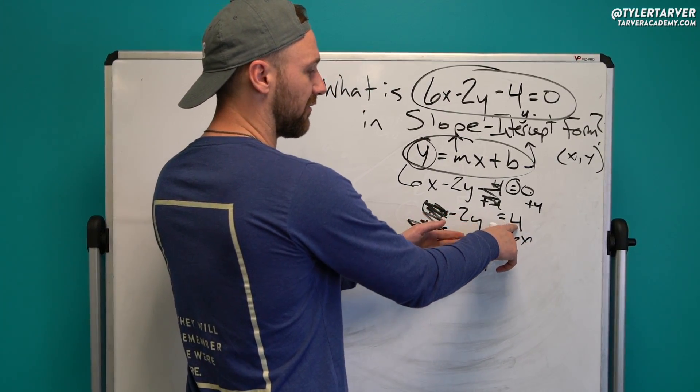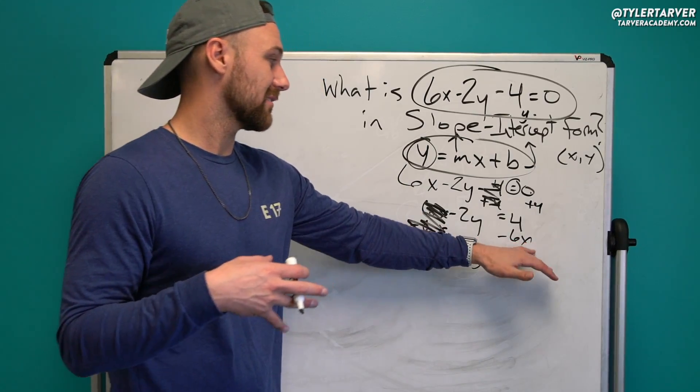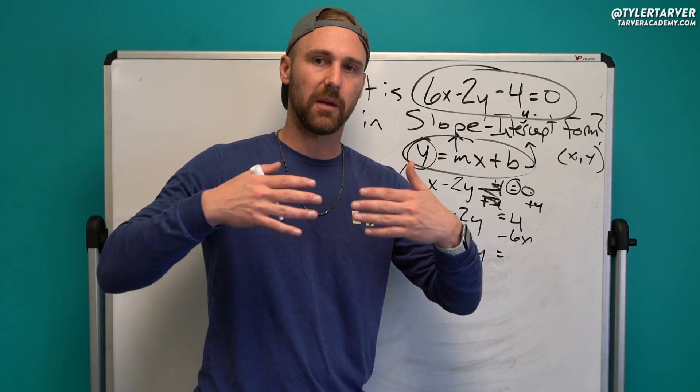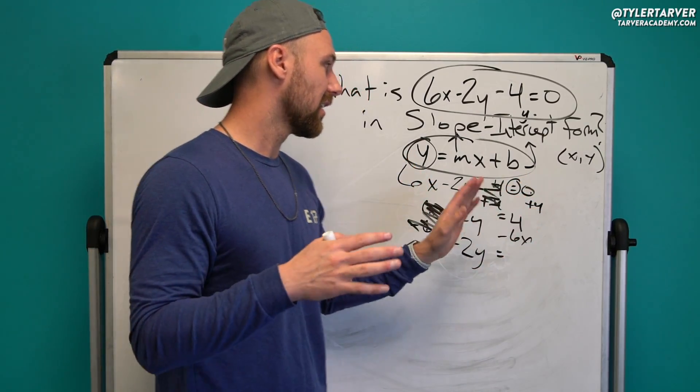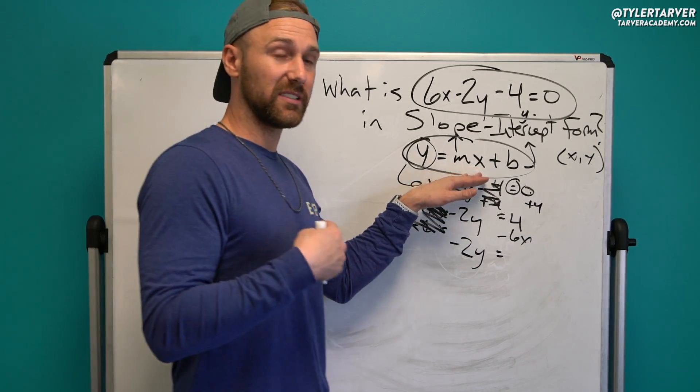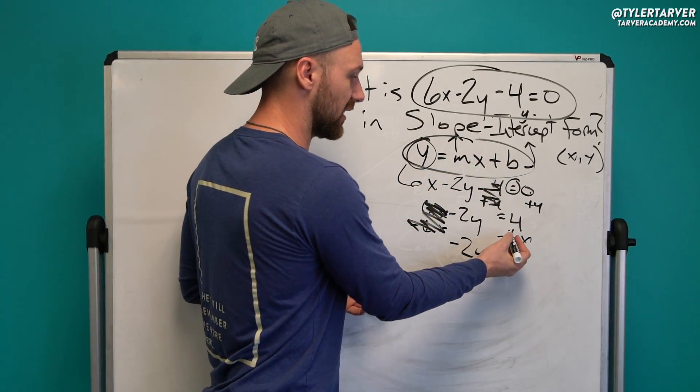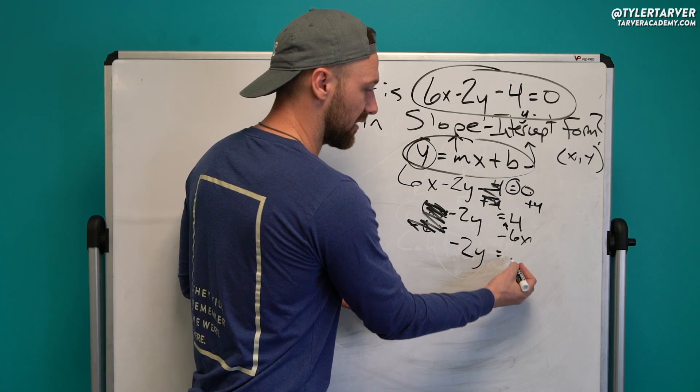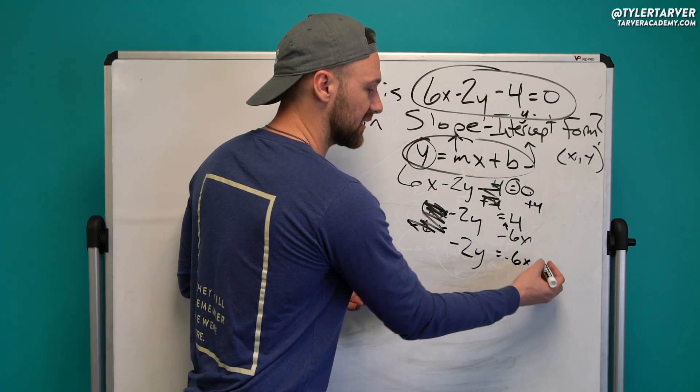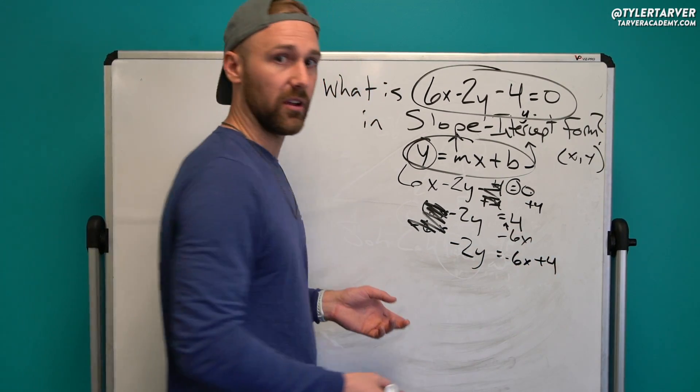Now I could just do 4 minus 6x, and they don't combine because that one has a variable with it. A lot of people would just tag it on to the end. But I'm going to do myself a favor and put it in the front. So I'm just going to push that little guy right up in there. So it'll be negative 6x, and that's a positive 4, so it's plus 4.